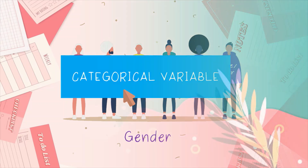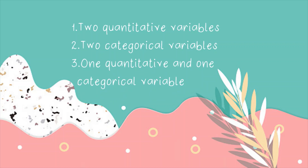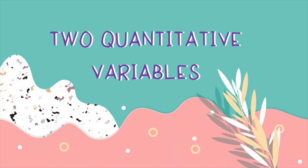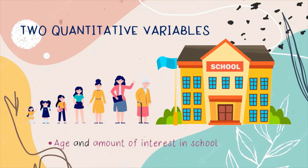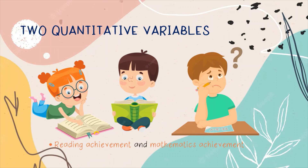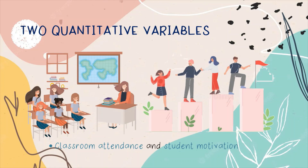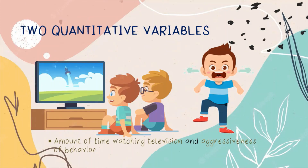Did you know that researchers often study not only just the relationship between one quantitative and one categorical variable, and so forth? Let's take a look at some examples. Two quantitative variables: age and amount of interest in school; reading achievement and mathematics achievement; classroom attendance and student motivation; amount of time watching television and aggressiveness of behavior.